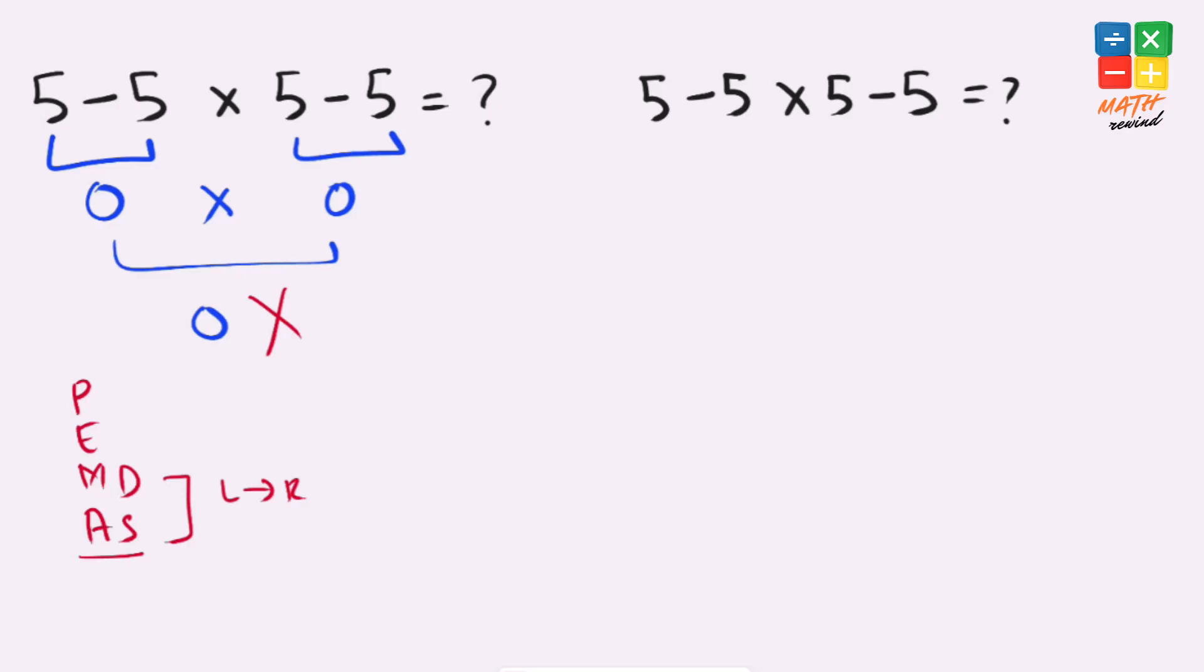Now let's rewind and solve this problem in the right way. So here we have multiplication and we have subtraction operators available in the equation. According to the rules, multiplication comes first.